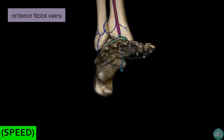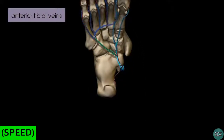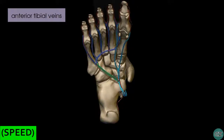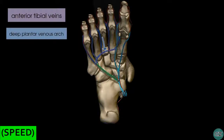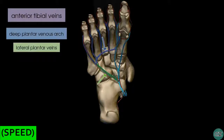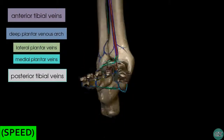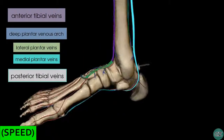Rotating to the plantar surface of the foot, you can see veins accompanying the deep plantar arterial arch — this is the deep plantar venous arch. Just like the arterial system has medial and lateral plantar arteries, we also have medial and lateral plantar veins. In green is the lateral plantar vein, and in light blue are the medial plantar veins accompanying the medial plantar artery. These plantar veins then drain into the posterior tibial vein, which runs just behind the medial malleolus and accompanies the posterior tibial artery.